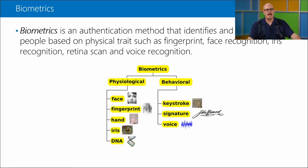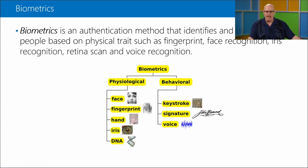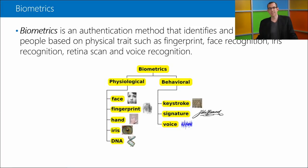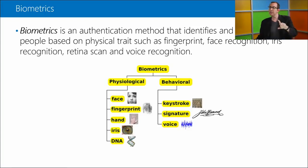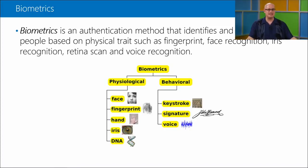Biometrics are part of your physicality. There are physiological biometrics - part of your face, retina, fingerprint, hand, iris, DNA, saliva - and behavioral biometrics such as keystrokes, signature, your name, or your voice. All are examples of biometrics used for authentication.